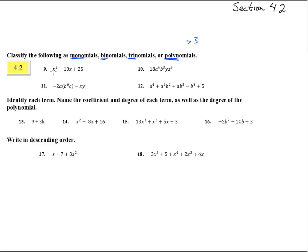So this is going to be one, two, three — that is a trinomial and technically a polynomial as well. Here, notice there is no plus or minus sign; that is all one term, that is a monomial. This one right here has one term and another, so that is a binomial.